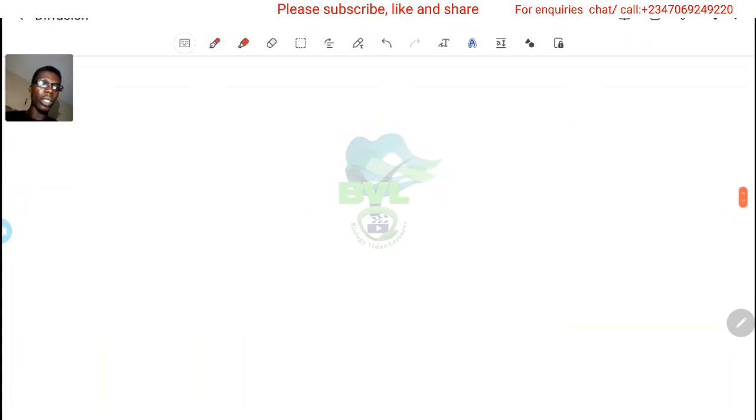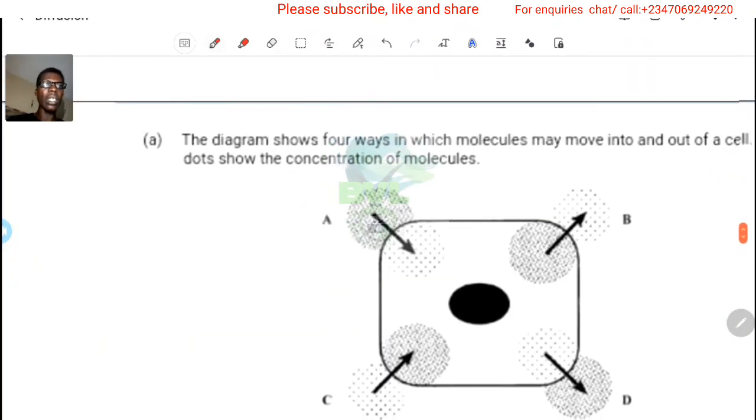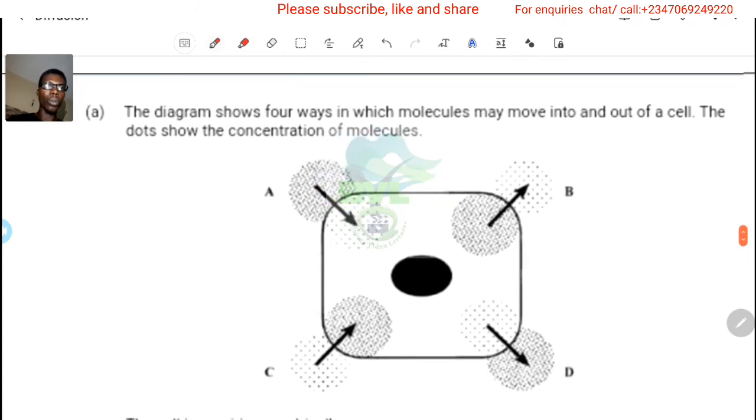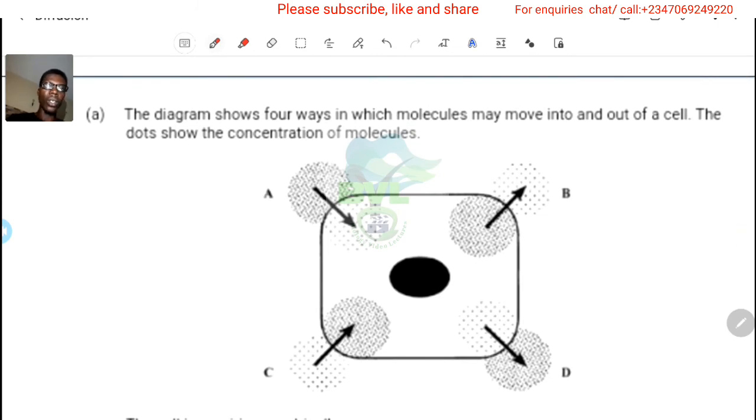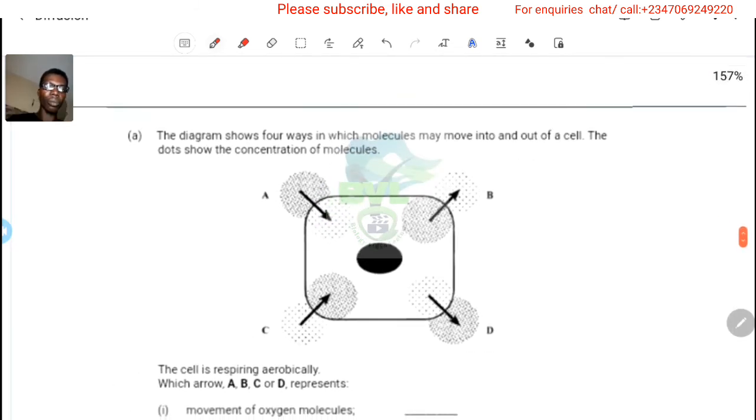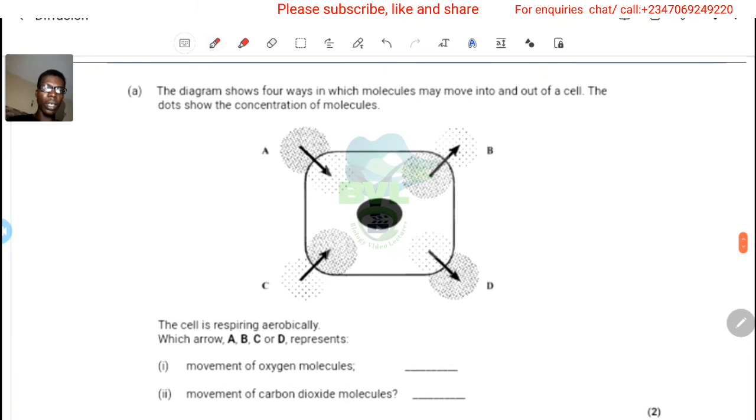The diagram shows four ways in which molecules may move into and out of a cell. The dots show the concentration of the molecules. The cell is respiring aerobically, which means it's going to be needing oxygen. Which arrow, A, B, C, or D, represents movement of oxygen?